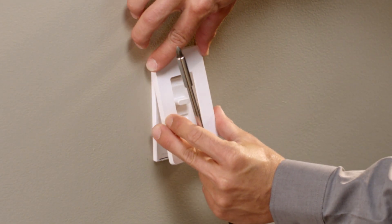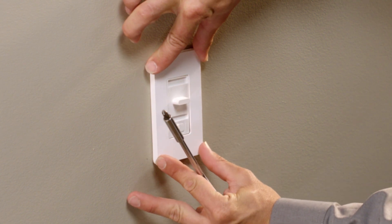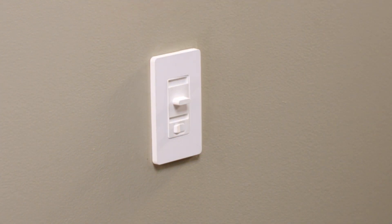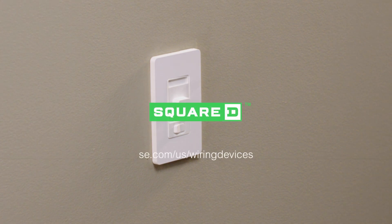Install the appropriate Square-D X-Series wall plate. Visit the Schneider Electric Wiring Devices homepage to learn more at se.com/us/wiring-devices.